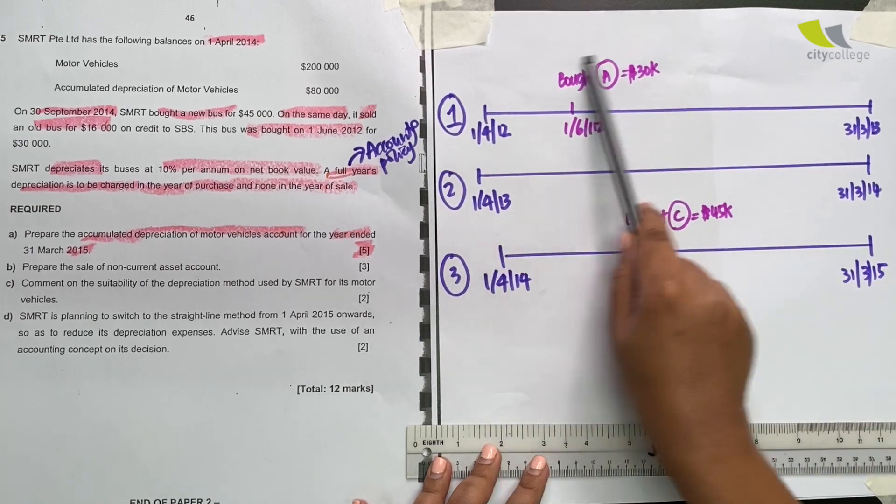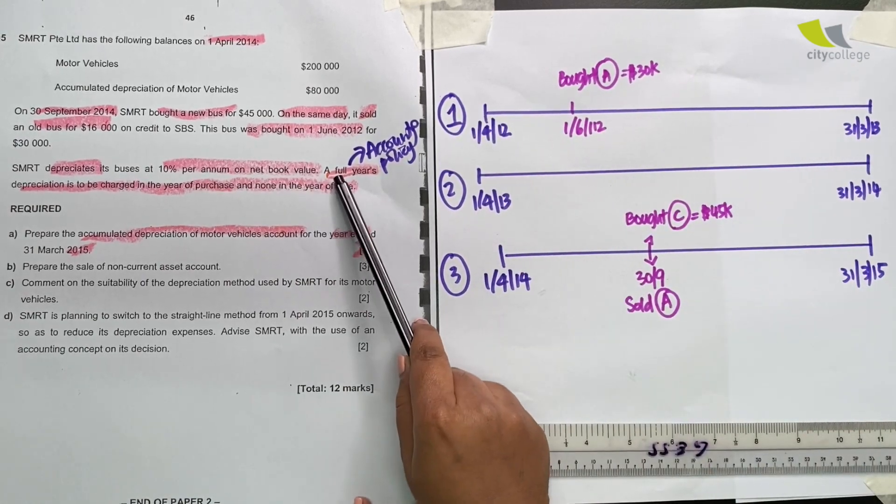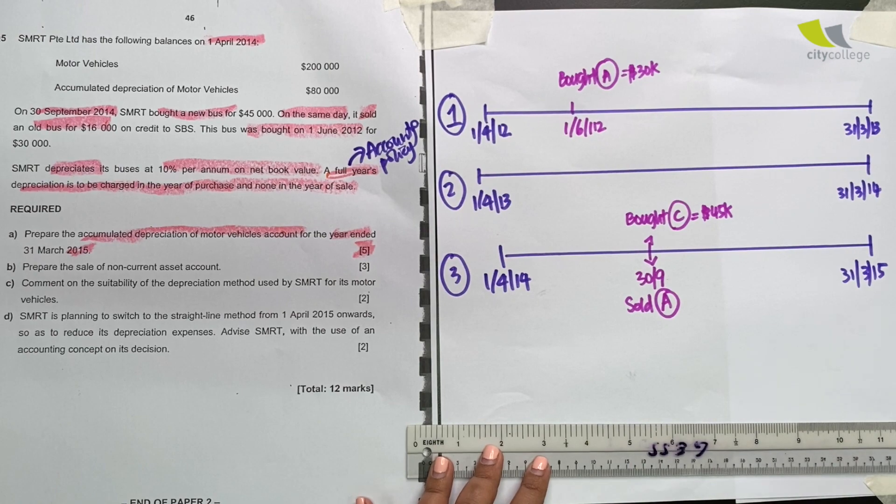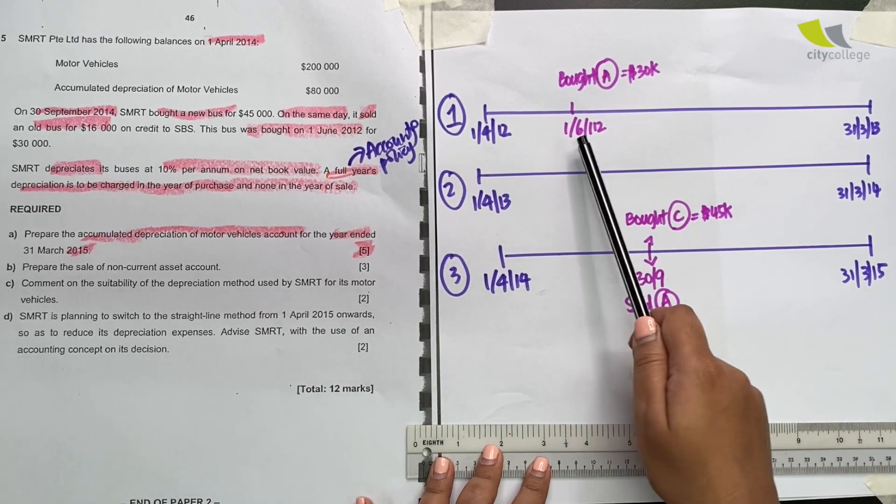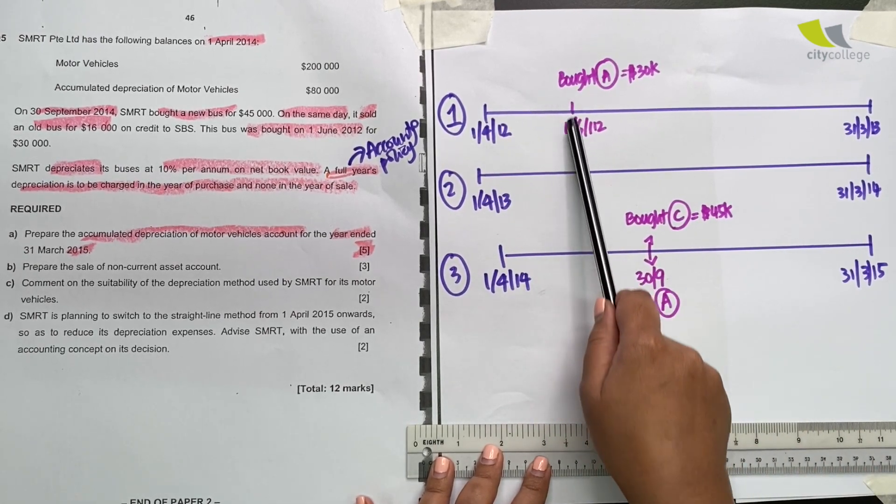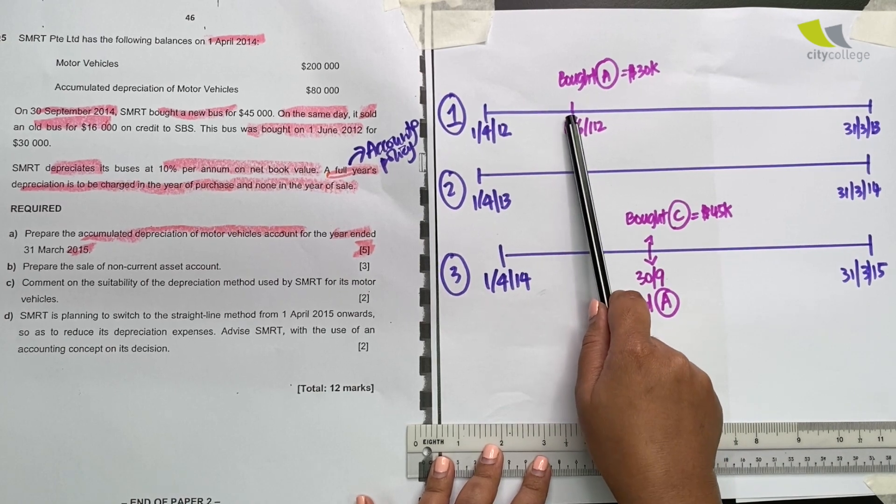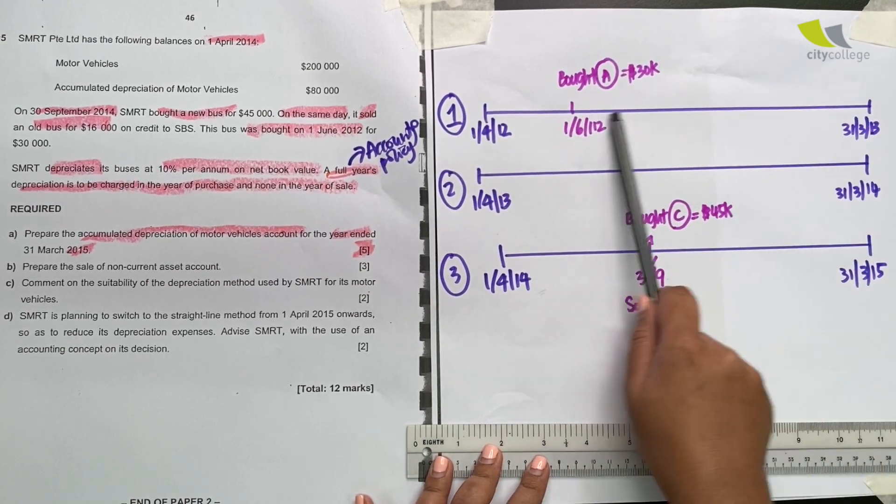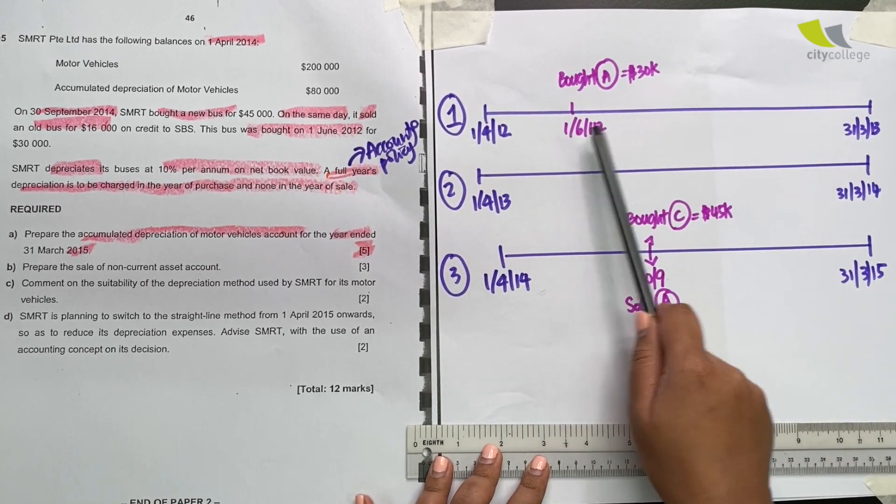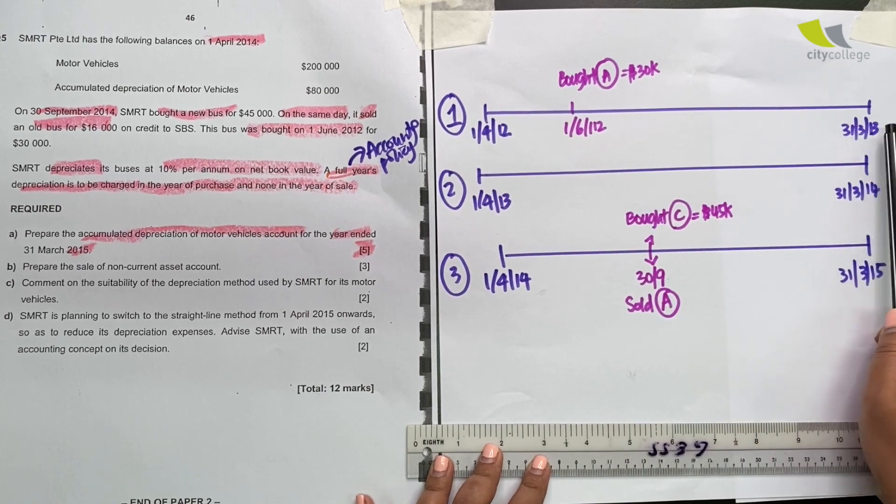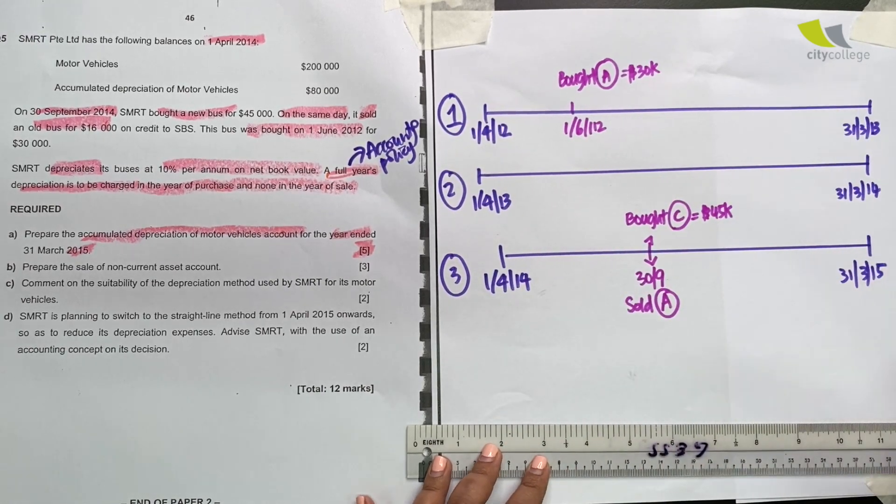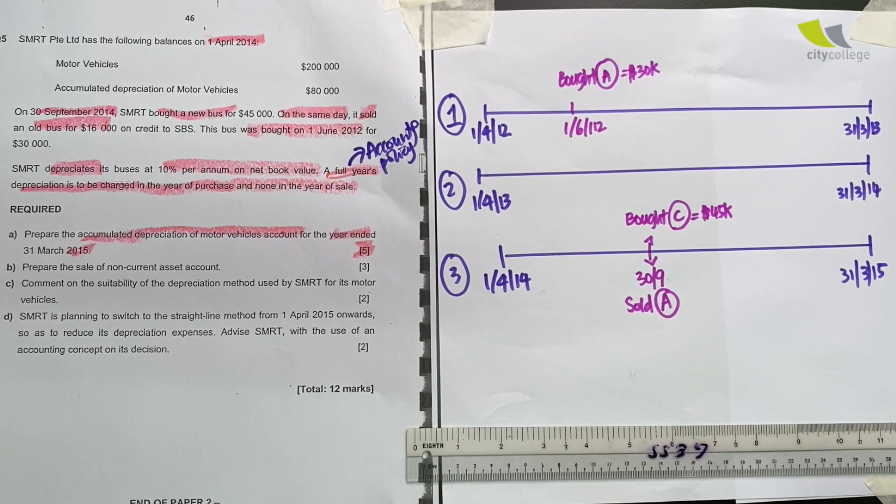It says give it a full year's depreciation. Why does the policy say that? Because actually, if I bought it only midway, I have to apportion my calculation by the number of months, which is from June to March. But by giving it a full year, it saves me the trouble of apportioning the calculation.